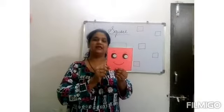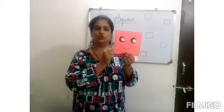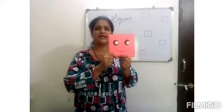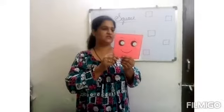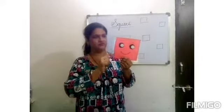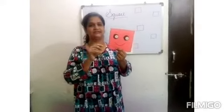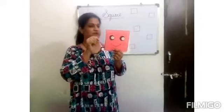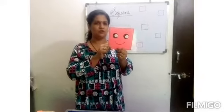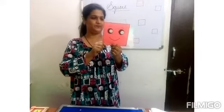Now let's count the sides. One, two, three, four. How many sides? Four sides. All my sides are equal — this, this, this and this. All four sides are equal. It looks like a box. You know a box — that is also in square shape.